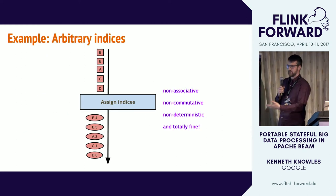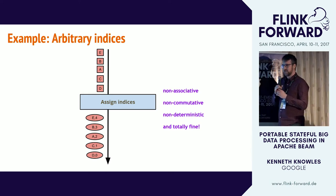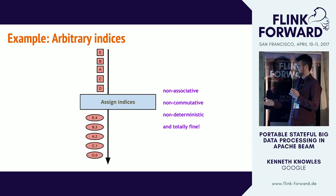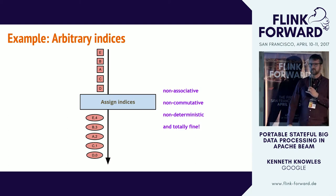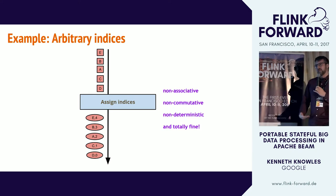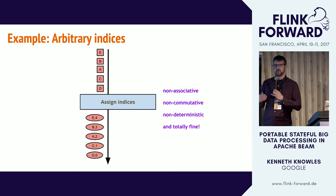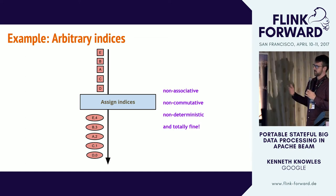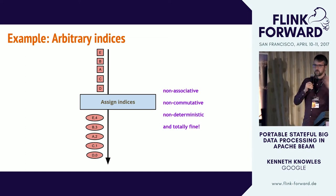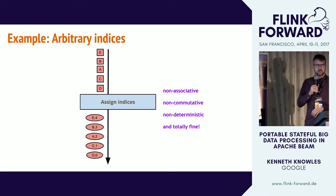Another simple example: a non-associative, non-commutative, non-deterministic operation where you take all input elements and just assign them increasing sequence numbers. If what the downstream transform needs is just a sequence number on every element, this is perfectly fine. You could never write this sensibly as a combiner — the accumulator would be really inefficient and of course non-associative and non-commutative. But it makes perfect sense as a stateful operator.